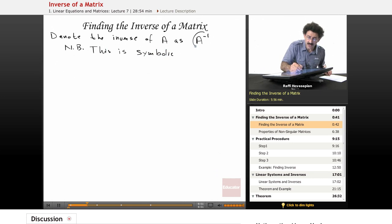What that means is this A to the negative 1, it's a symbol. This A to the negative 1 does not mean 1 over A. This doesn't work for matrices. It's not defined. This is strictly a symbol that we use.